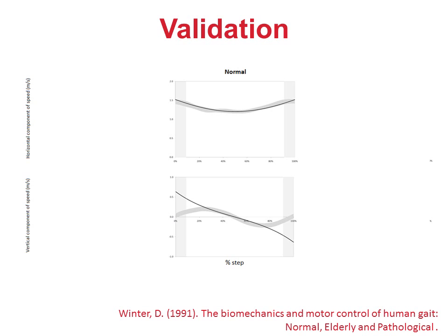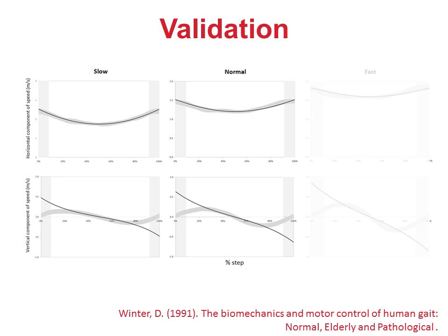Winter also includes data for slow walking and fast walking. Model predictions are equally good for the horizontal component, but the discrepancies at the beginning and end of stance increase as walking speed increases.